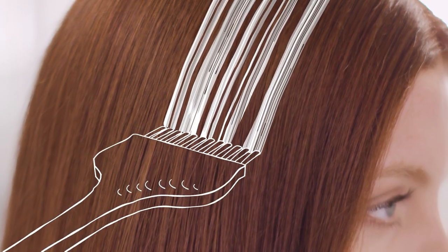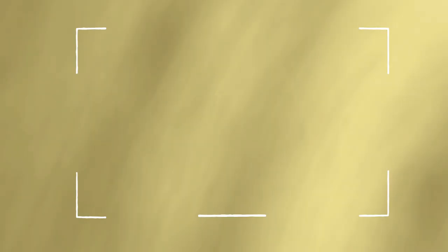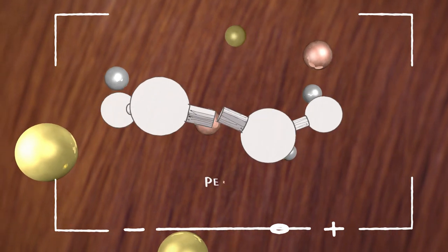When you color hair with permanent color, the metals in the hair can meet the peroxide, creating free radicals.